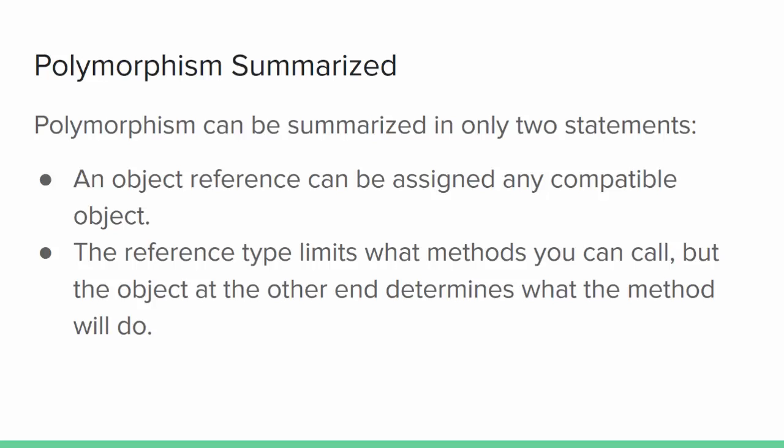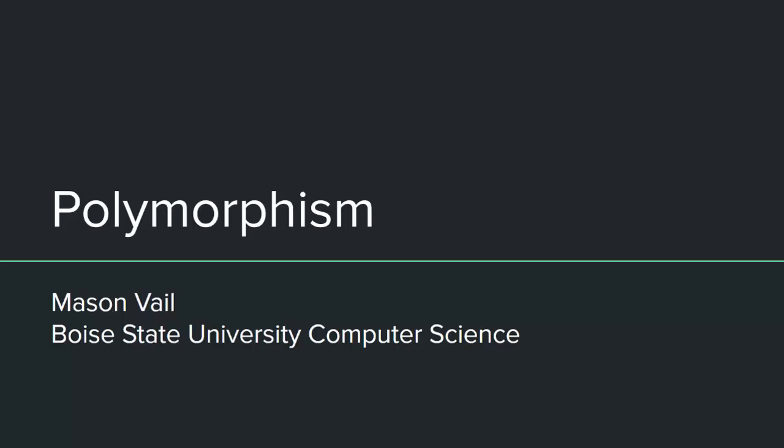All of polymorphism can be summarized in two statements: an object reference can be assigned any compatible object, and the reference type limits what methods you can call, but the object at the other end determines what the method will do. It's a little like chess — you can learn all the rules in a few minutes, but then spend a lifetime trying to put them to good use. I hope this introduction to polymorphism has been helpful.